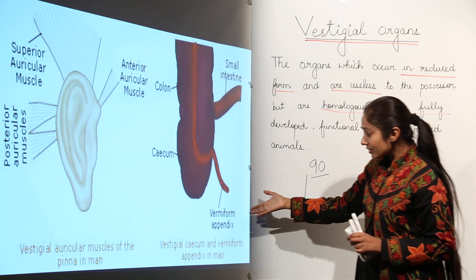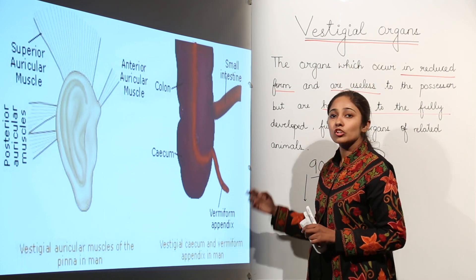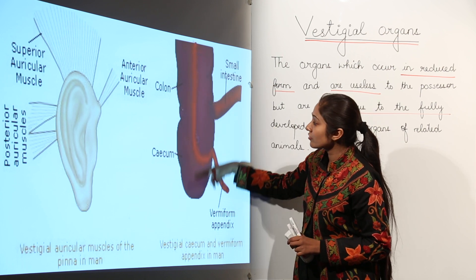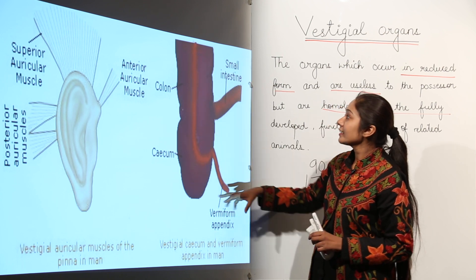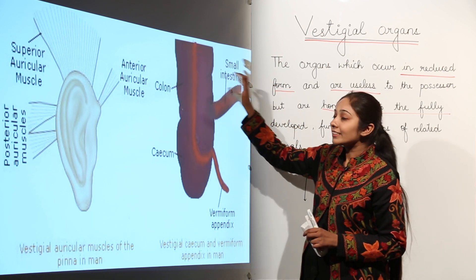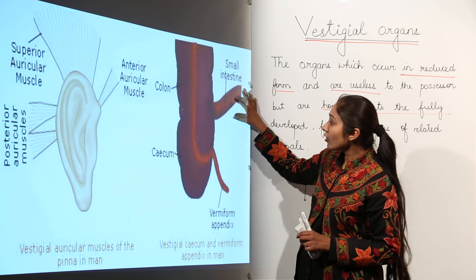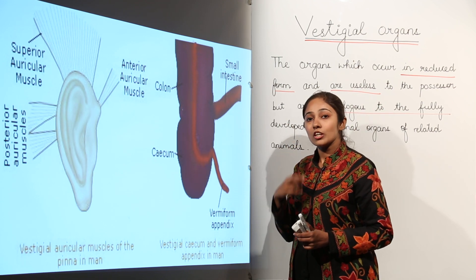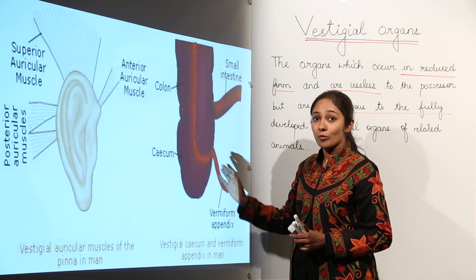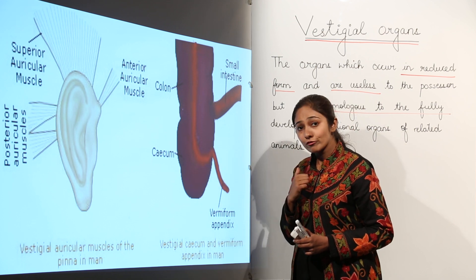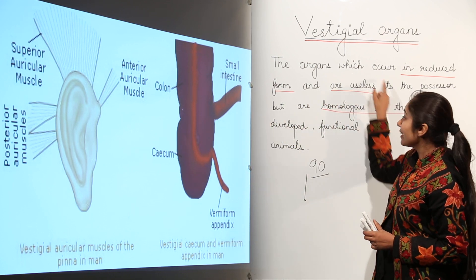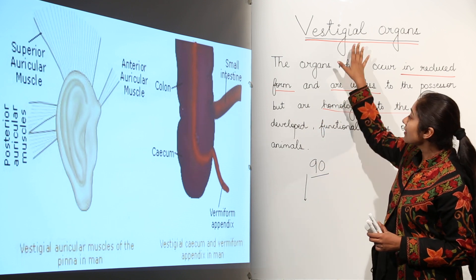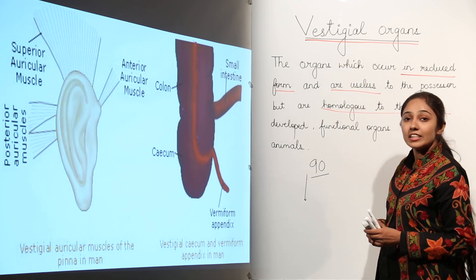We call the appendix a vermiform appendix. It is a tube-like structure connecting the large intestine and the small intestine. Since it helped in the digestion of cellulose and we no longer eat raw food, it is again useless and needs to be removed. It is an example of a vestigial organ.